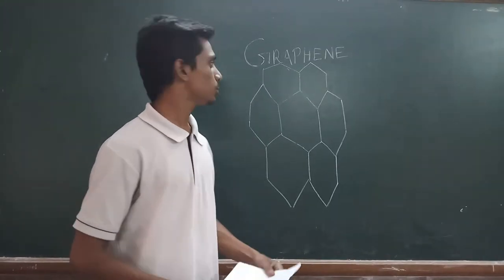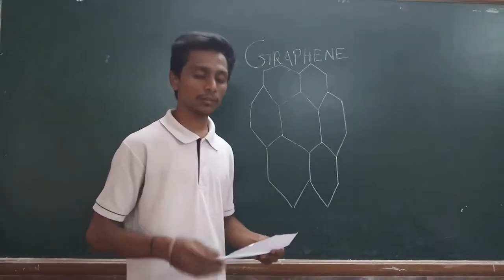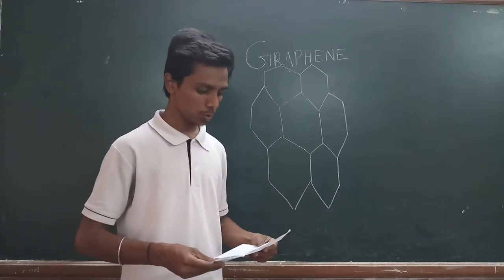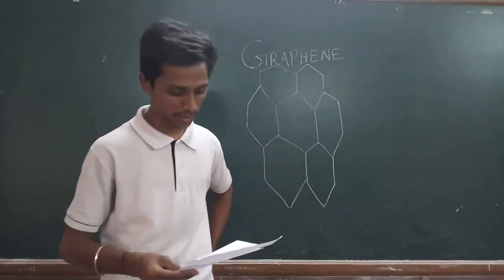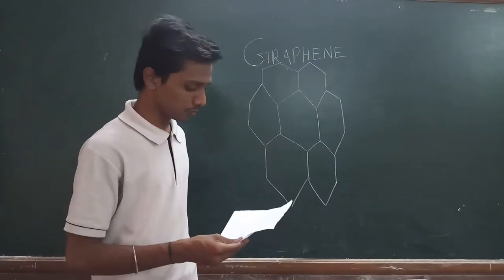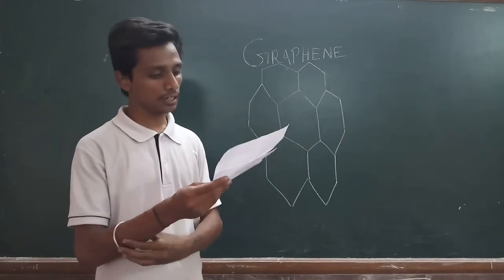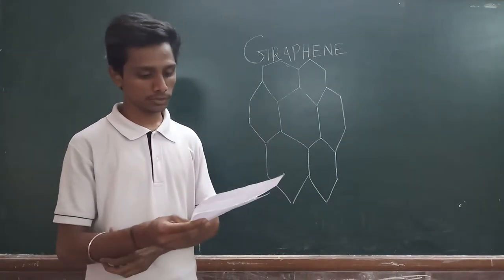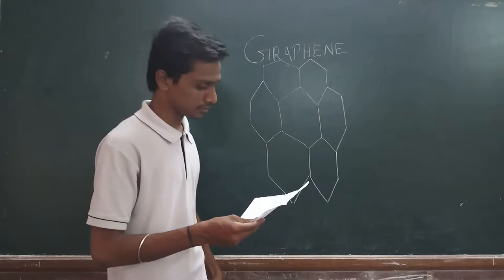My name is Pawan Viradhar and today's topic is Graphene. Graphene is a semi-metal with small overlap between the valence and conduction bands. It is an allotrope form of carbon consisting of a single layer of carbon atoms arranged in a hexagonal lattice.